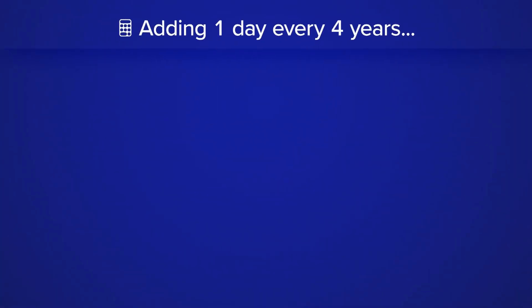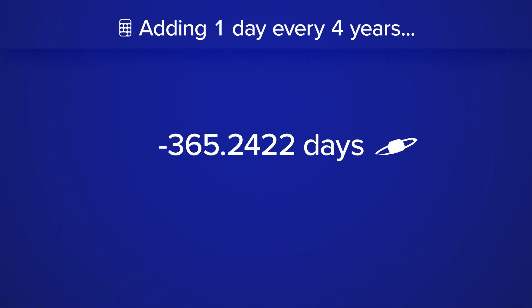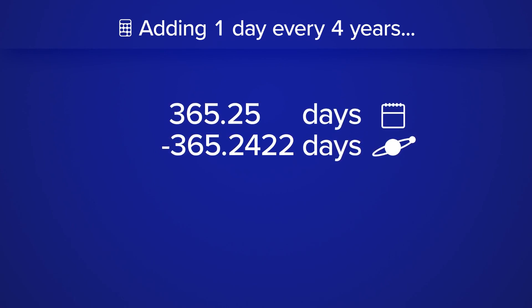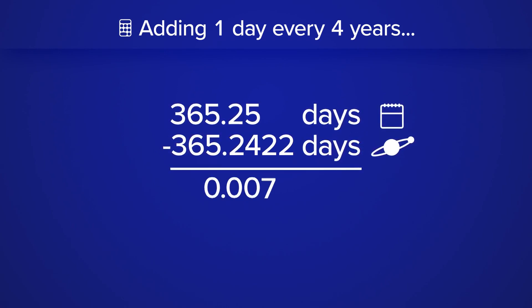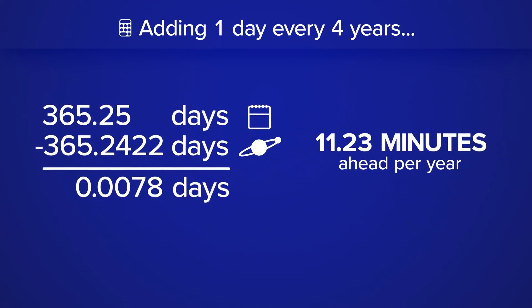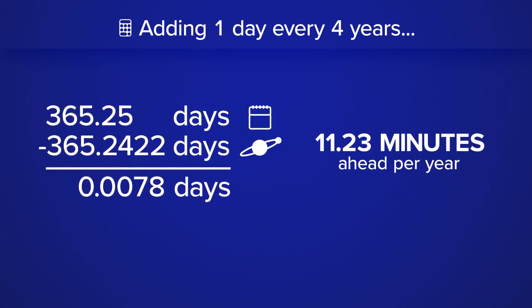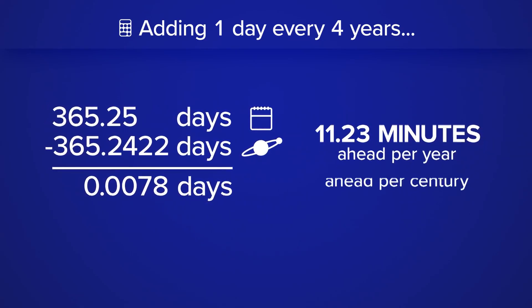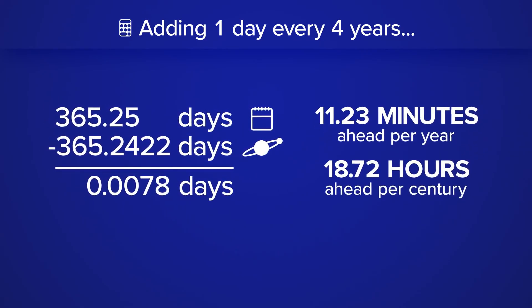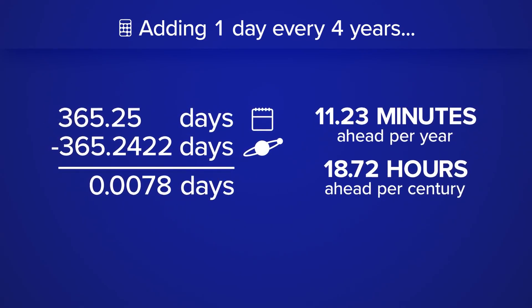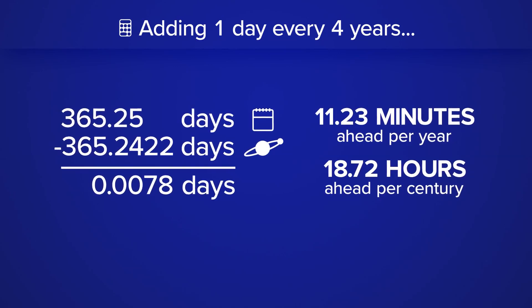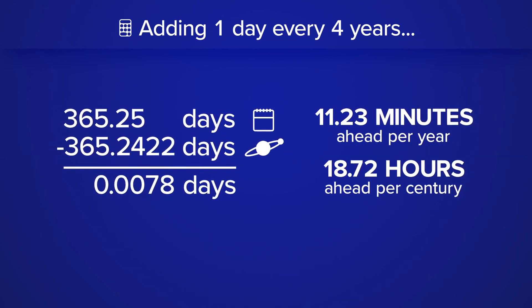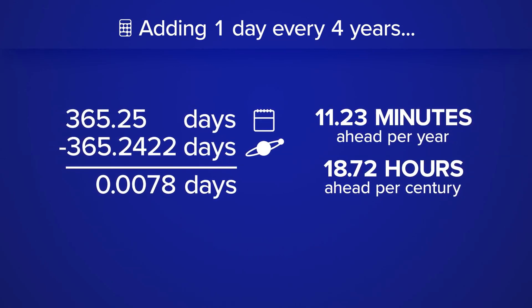When you subtract the amount of time it takes for the Earth to complete one revolution around the sun with this new solution, you find out we're still about 11 minutes off a year. In over 100 years, we'd be off by about 18 hours, which doesn't sound like a big problem, but over the centuries it would eventually throw us off quite a bit.